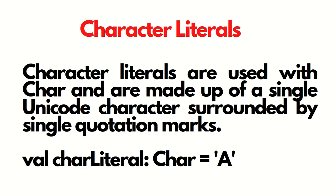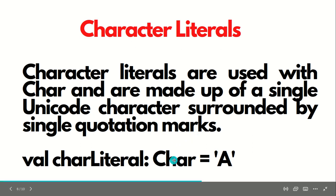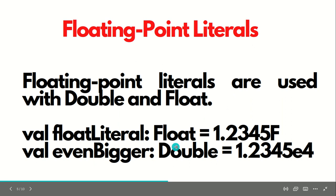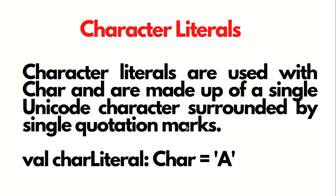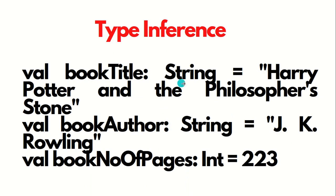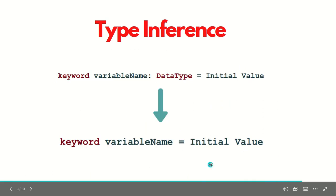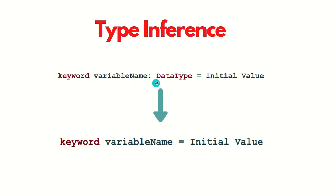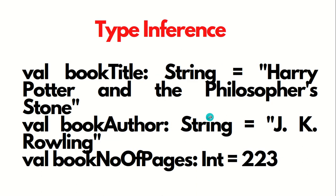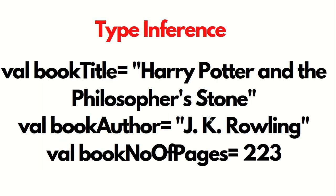In all the previous slides, you must have noticed that everywhere we are specifying types — like char, float, and double. It means we are specifying the type while writing the code, but we don't have to. Generally we use the syntax: keyword, variable name, colon, data type, equals, initial value. But this can be changed to: keyword, variable name, equals, initial value, because Scala already knows the type. This previous example will become one in which there is no specific specification of the data types.